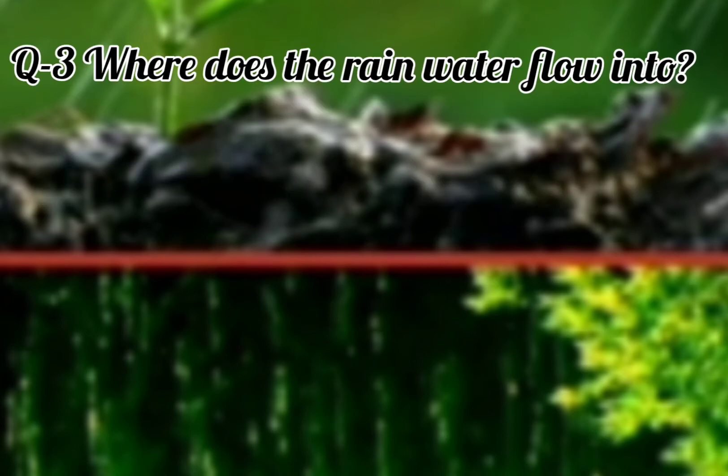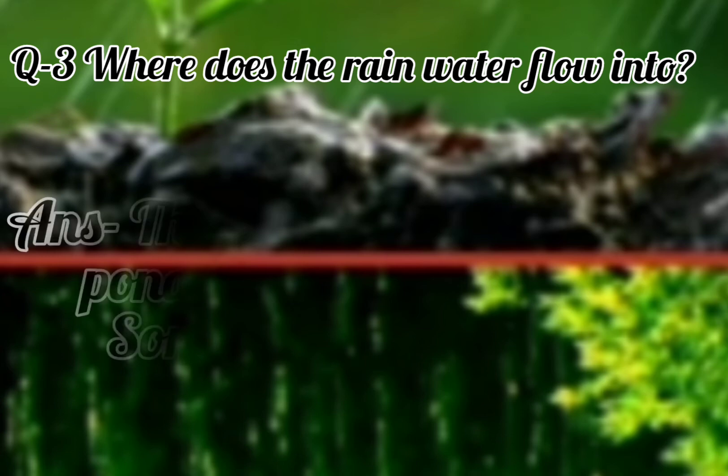Question number 3. Where does the rainwater flow into? The answer is: the rainwater flows into ponds, lakes, and rivers, and some of it goes under the ground.